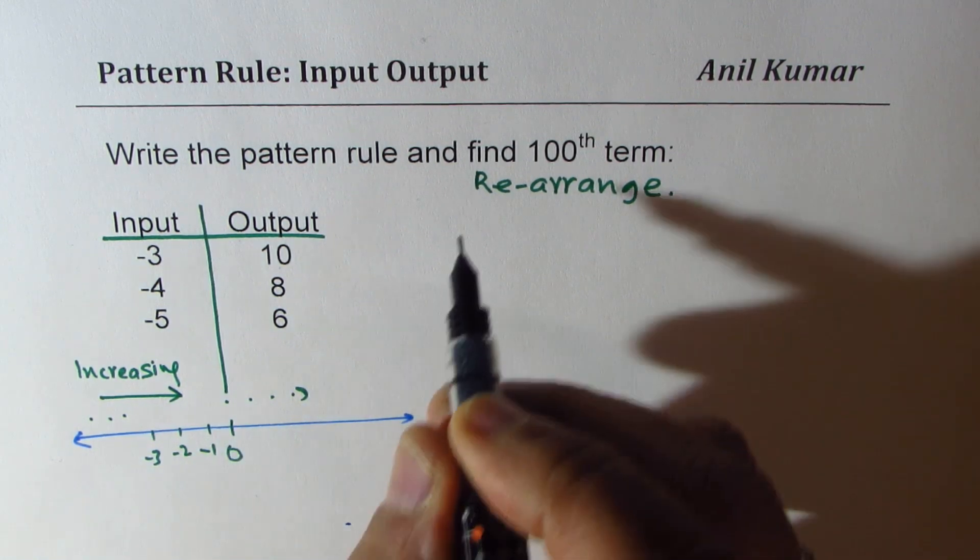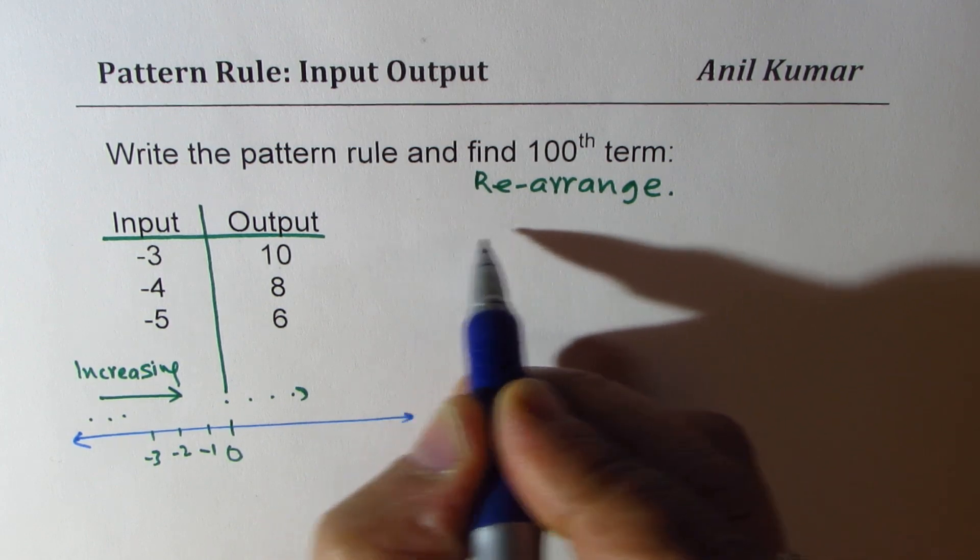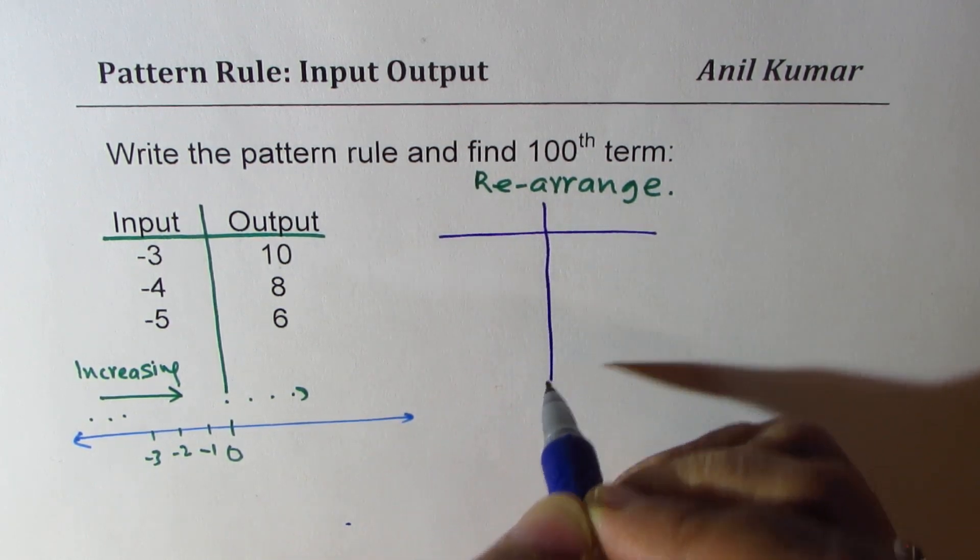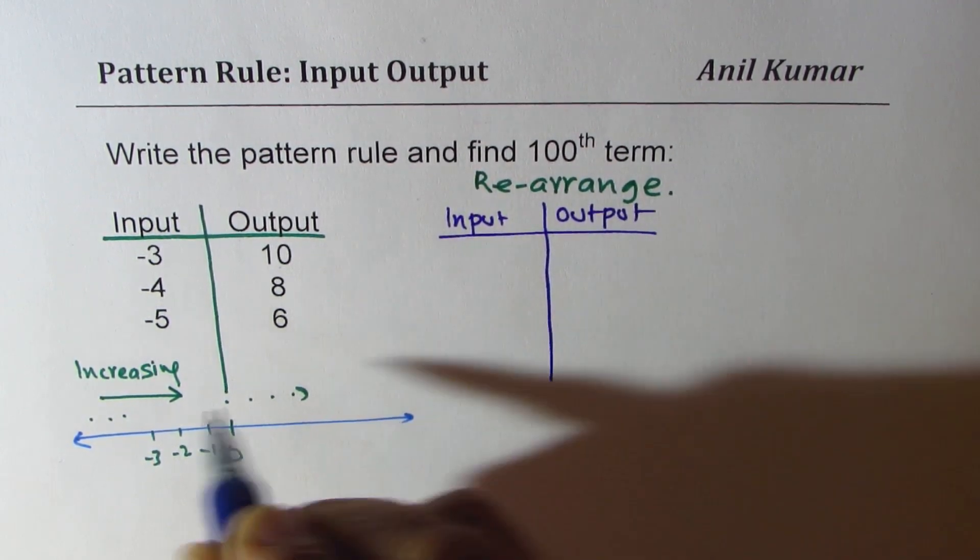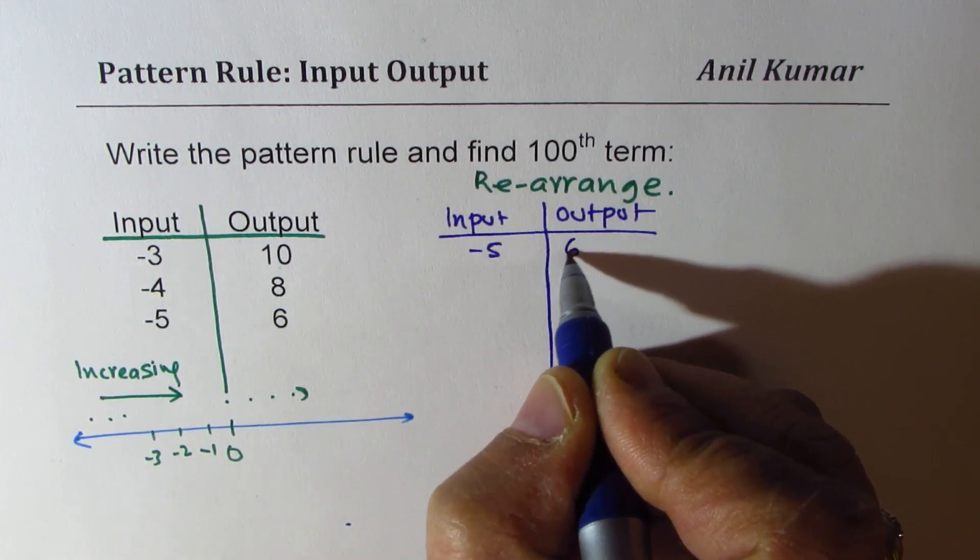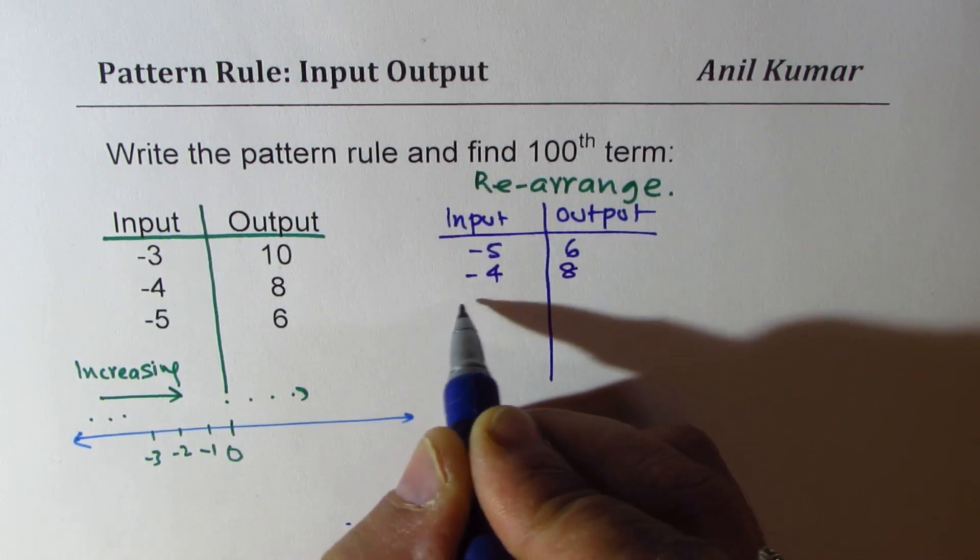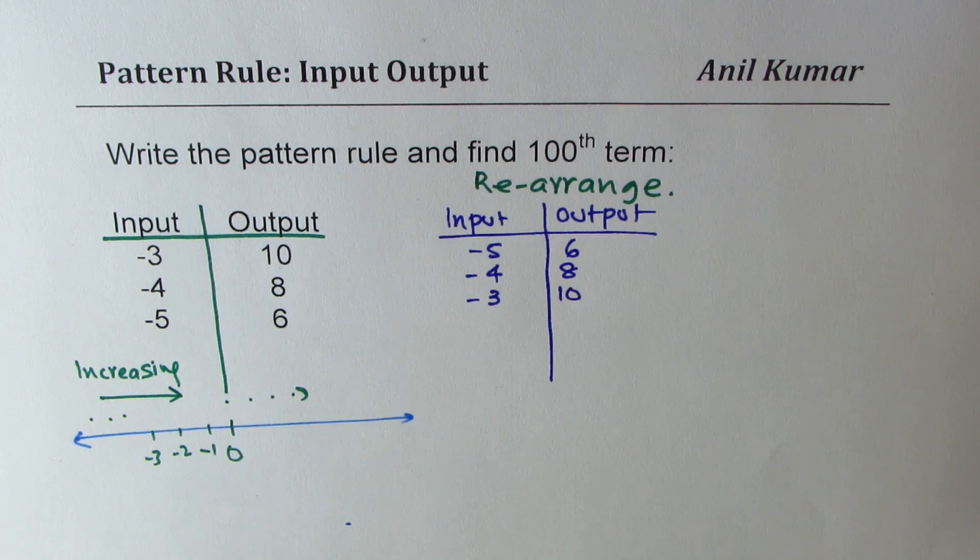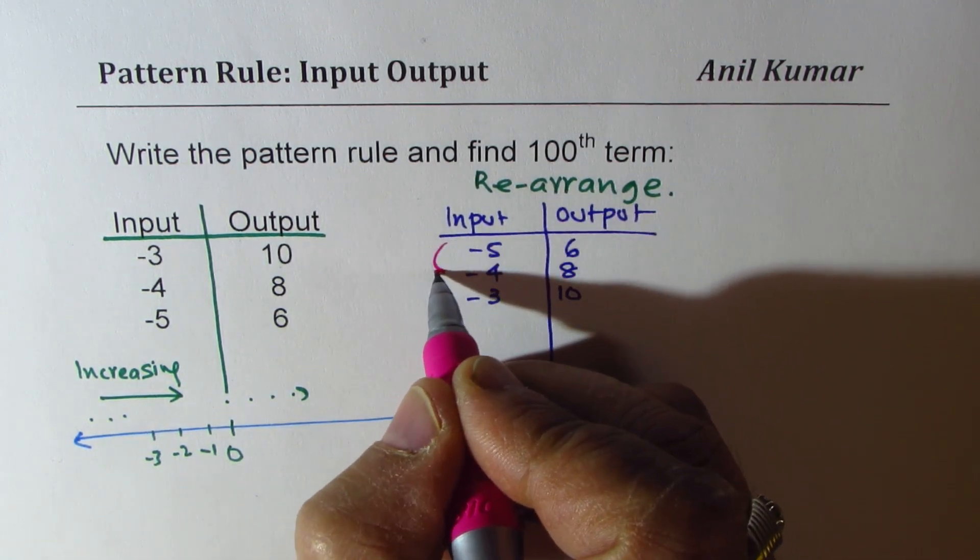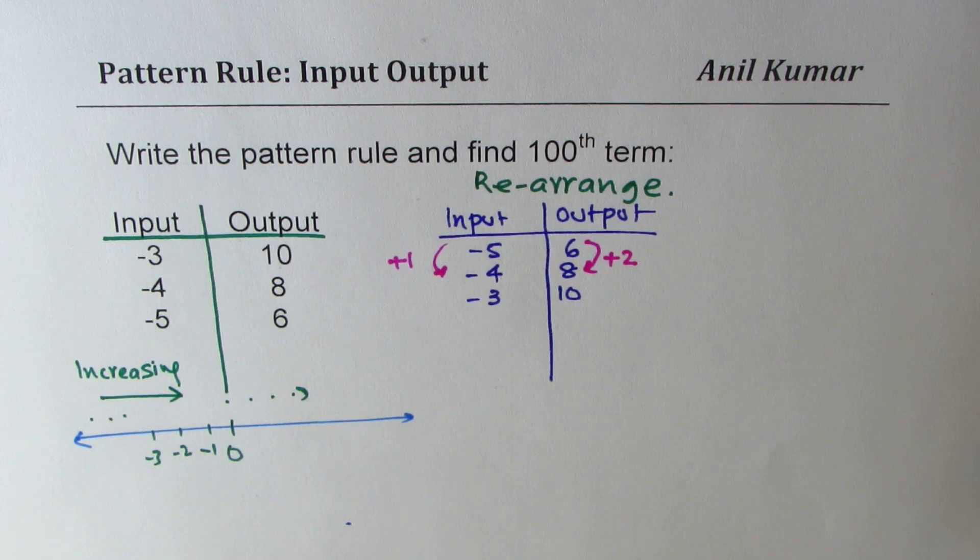So first step, what I'm going to do is rewrite the whole thing in a different order. So we rearrange the list. Input will be minus five giving six, then when it is minus four it gives me eight, and when it is minus three it gives me ten. Now we are actually increasing. We are adding one to the input and output we get plus two. So we are increasing by two each time.